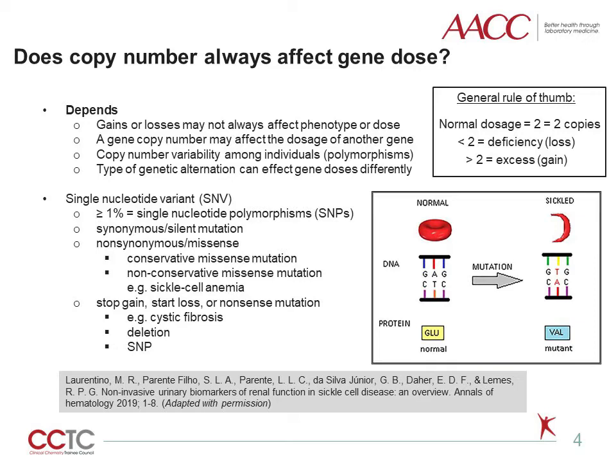For example, cystic fibrosis — similar to sickle cell — is an example of the gene dosage effect from inheriting two mutated copies of the CFTR gene, or cystic fibrosis transmembrane conductance gene, located on chromosome 7q31.2. Sometimes nonsense mutations are due to a deletion of one or more nucleotides, and at other times they could be due to a single nucleotide polymorphism.